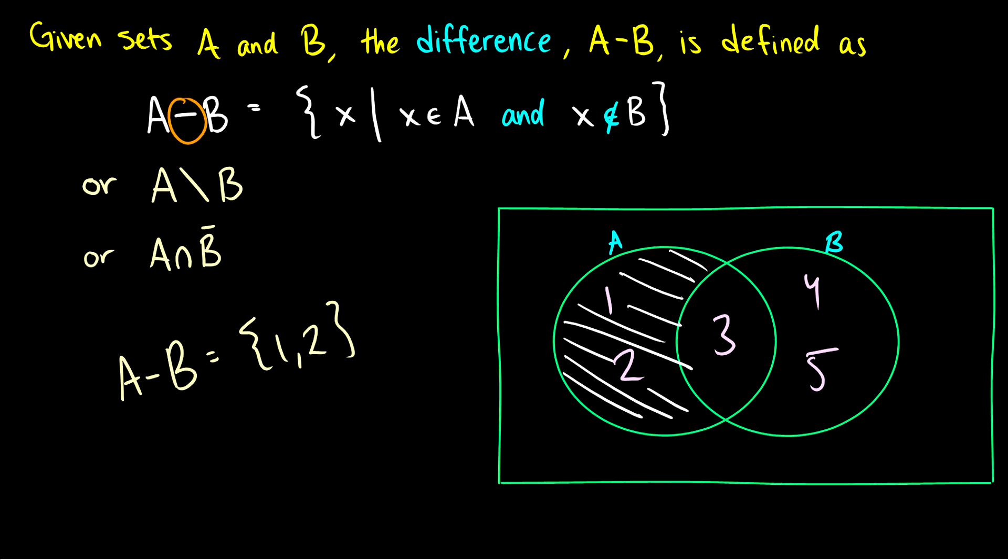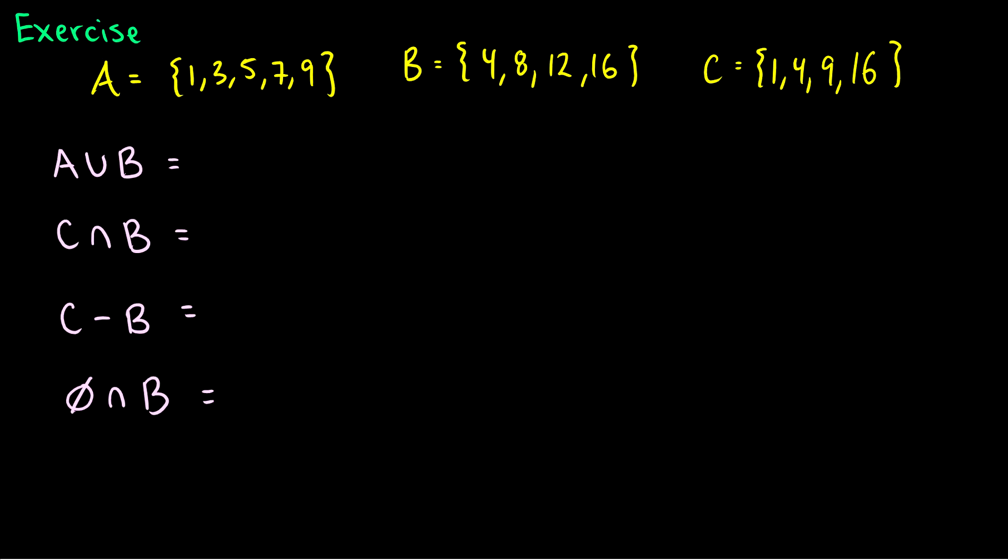So now that we've introduced all the operators, let's do some practice exercises. The first one we have A is odd numbers less than 10, B is multiples of 4, and C is the squares of the first four numbers.